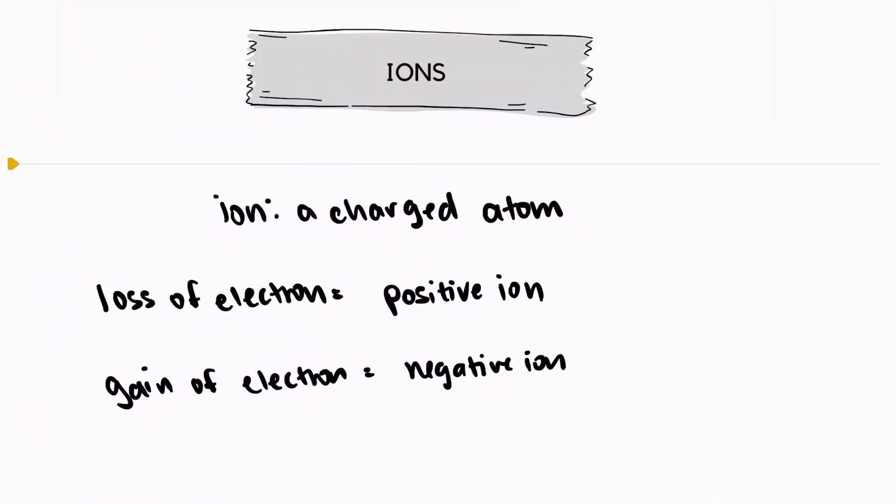Hi, welcome back. In this video we're going to take a look at ions. An ion is a charged atom and there's two types of ions that we could have, a positive ion and a negative ion.